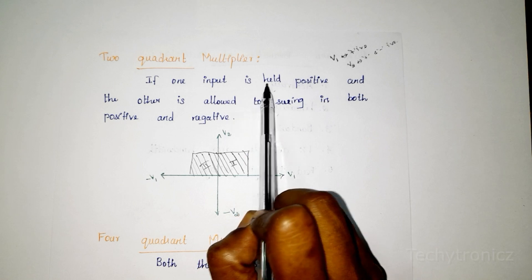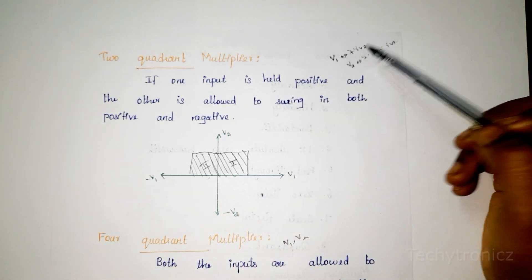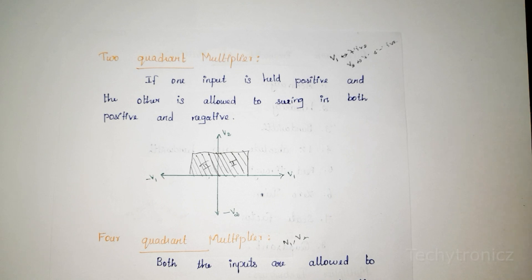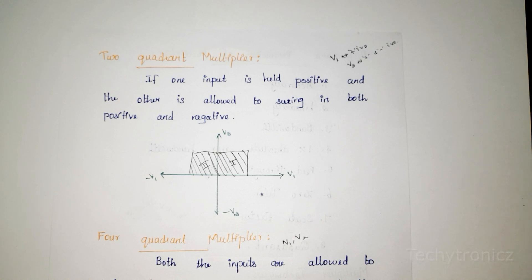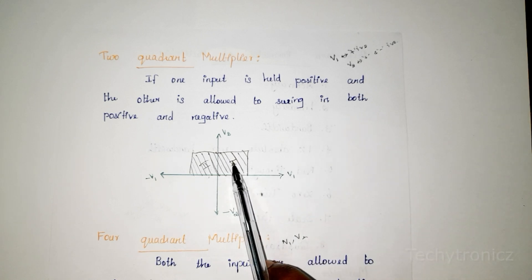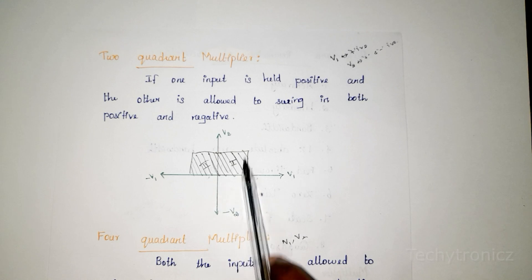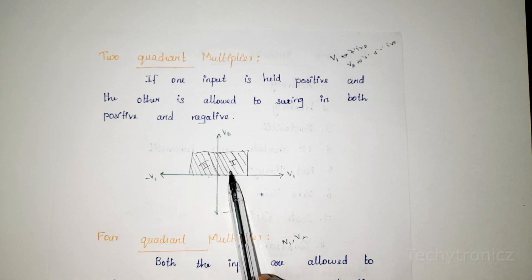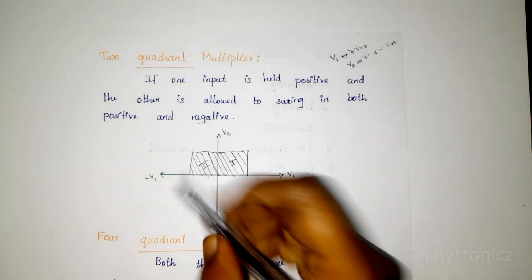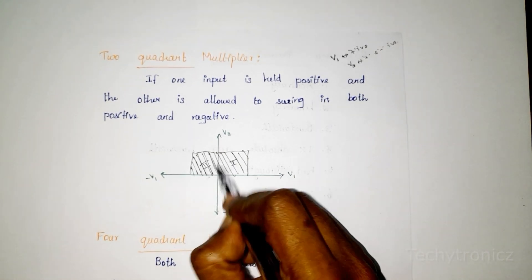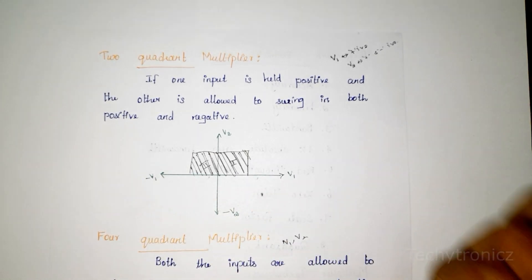The second type is the two quadrant multiplier. Here one input, say V1, is held positive, while the other input is allowed to swing in both positive and negative directions. So the first input is fixed in the positive side, and the second input swings both positive and negative.